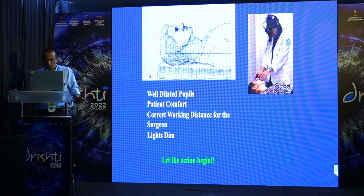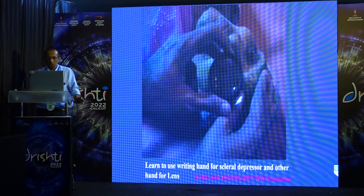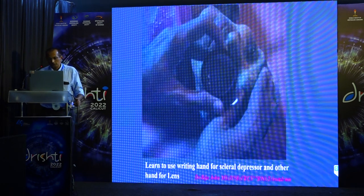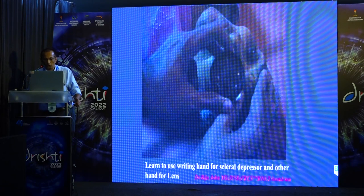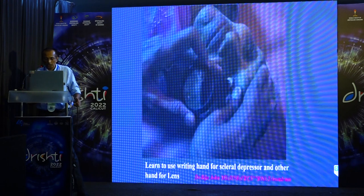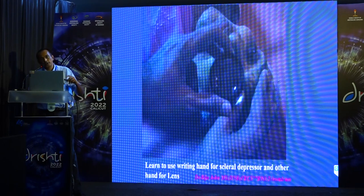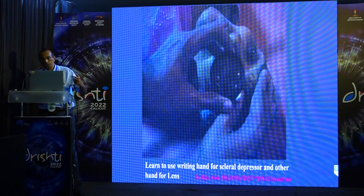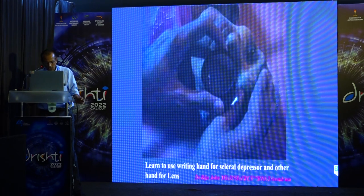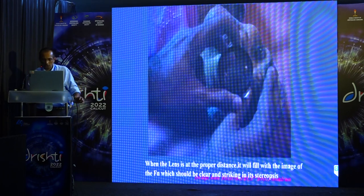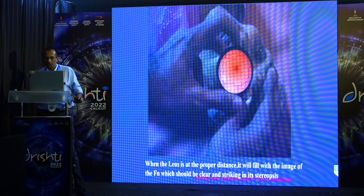Light should be dimmed. Learn to use your dominant hand for the scleral depressor and the non-dominant hand for the lens. The dominant hand's thumb also helps move the other lid and keeps the lids open. The lens is held in the grip described, with the middle finger resting a slight distance from the lower lid. Introduce the lens about one inch from the patient's eye and slowly lift upward — at a particular point you will see the lens filling with the beautiful image of the retina.